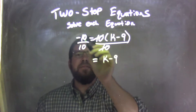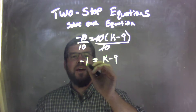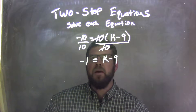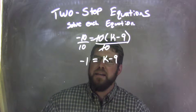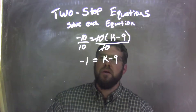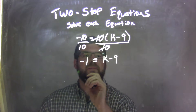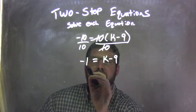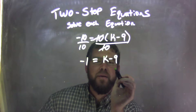Negative 10 divided by positive 10 is just negative 1. Negative divided by positive is a negative, and 10 divided by 10 is 1. So negative 10 divided by 10 is negative 1. So now I have negative 1 equals k minus 9.